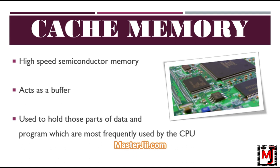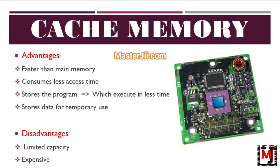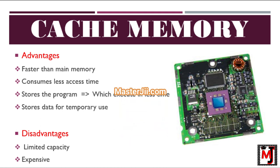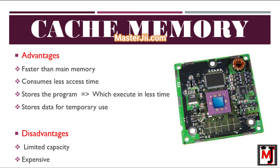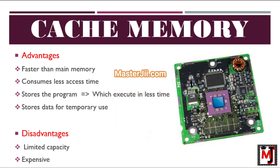From cache memory, the CPU can access them. The advantages of cache memory are: cache memory is faster than main memory, it consumes less access time as compared to main memory, it stores the program that can be executed within a short period of time, and it stores data for temporary use.